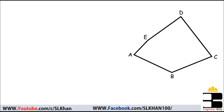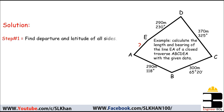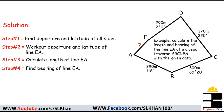We are asked to calculate the length and bearing of the line EA of a closed traverse ABCDEA, with the given data. The given data is enough to work out the required measurements. In the solution, as you can see, line EA is the last line of the given closed traverse. The latitude and departure of all sides will be found, and then the sum can be taken to find the departure and latitude of line EA. Once we get both departure and latitude of line EA, its length and bearing can be found easily.